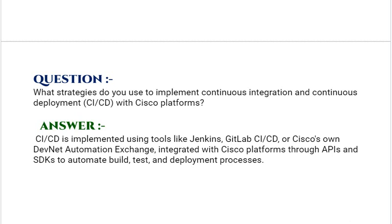What strategies do you use to implement continuous integration and continuous deployment (CI/CD) with Cisco platforms? Your answer should be: CI/CD is implemented using tools like Jenkins, GitLab CI/CD, or Cisco's own DevNet Automation Exchange, integrated with Cisco platforms through APIs and SDKs to automate build, test, and deployment processes.